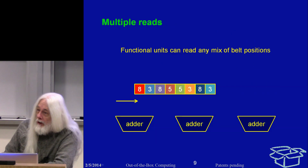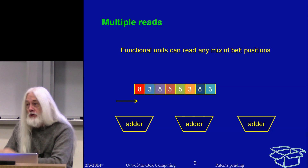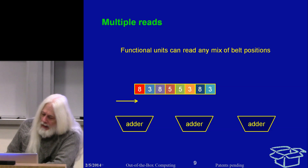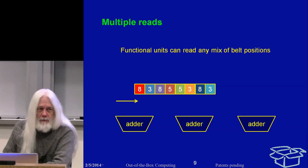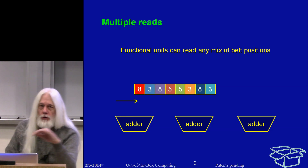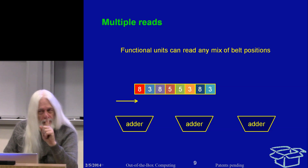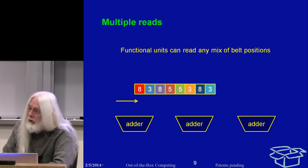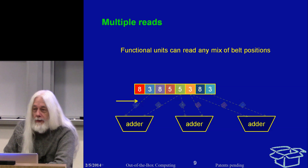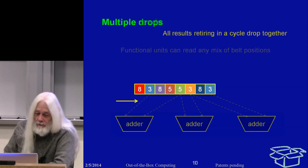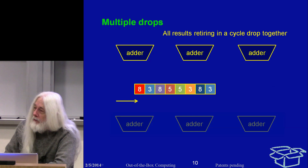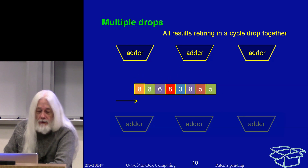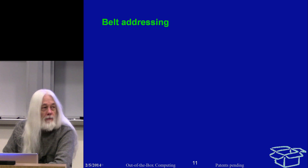There are many functional units. The Mill is a wide-issue machine in the sense that a single instruction can contain many operations, like a VLIW does. Fair warning: an add is not an instruction — an add is an operation, and there may be a ton of other operations in the same instruction. You can have three different functional units independently grabbing values off the belt, and when they're ready to retire a result, all results drop onto the front of the belt.